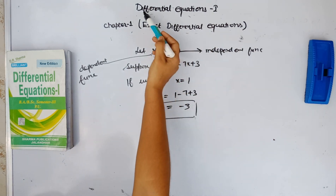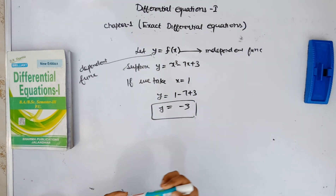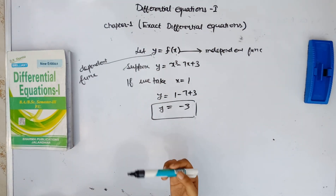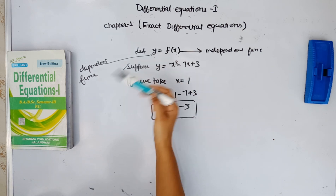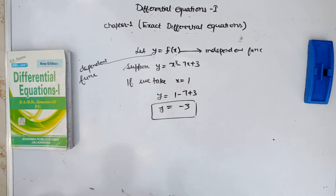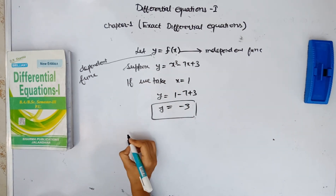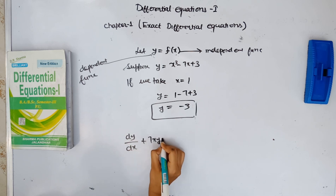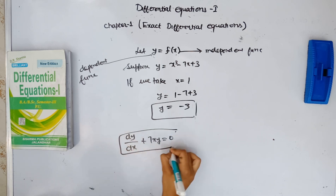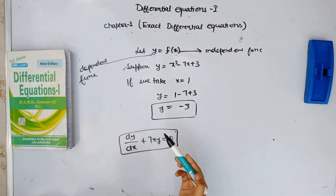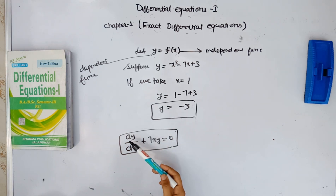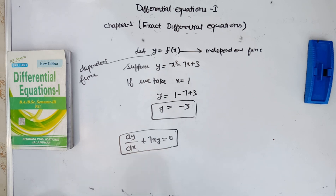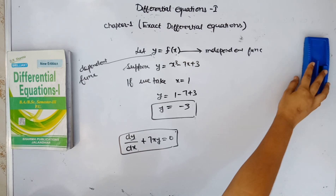We have differential equations which involve the derivative of the dependent function with respect to the independent function. For example, dy over dx plus 7xy is equal to 0. This is one example of a differential equation — it involves the derivative of the dependent function with respect to the independent function.